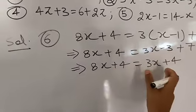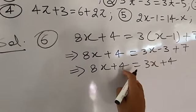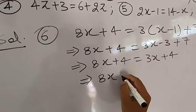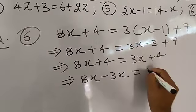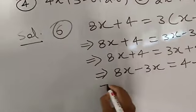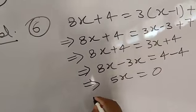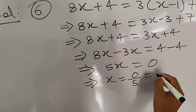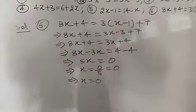Now, just like the previous questions, send the variable term to one side and numerical value to the other. Transferring plus 3x to the left gives minus 3x, and plus 4 on the left transfers to the right as minus 4. So 8x minus 3x equals 4 minus 4. That gives 5x equal to 0. Therefore x equal to 0 upon 5, which is x equal to 0.